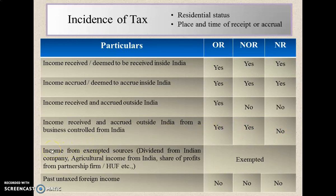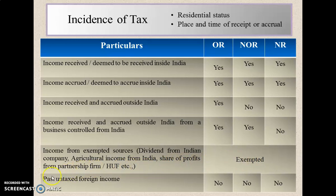Under the Income Tax Act, various incomes are exempted under Section 10. For example, income from dividends from an Indian company, agricultural income from India, share of profits from a partnership firm or HUF, etc. These exempted incomes need not be brought to tax at all — they are exempt for all three categories of residential status. The last category is past untaxed foreign income, meaning income earned in a foreign country before the previous year that has not been taxed at all. Such income is not taxable during the previous year for any category of residential status.